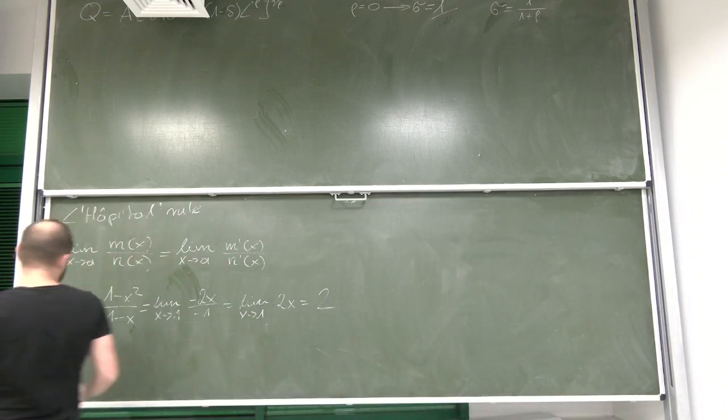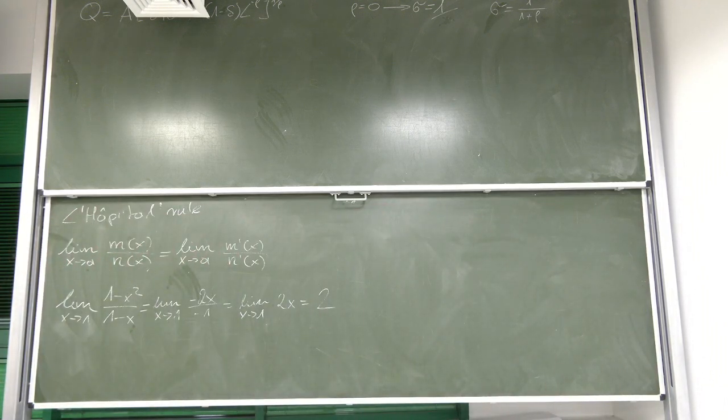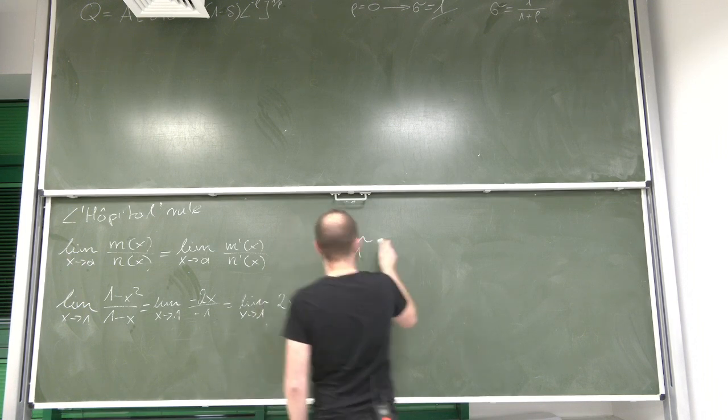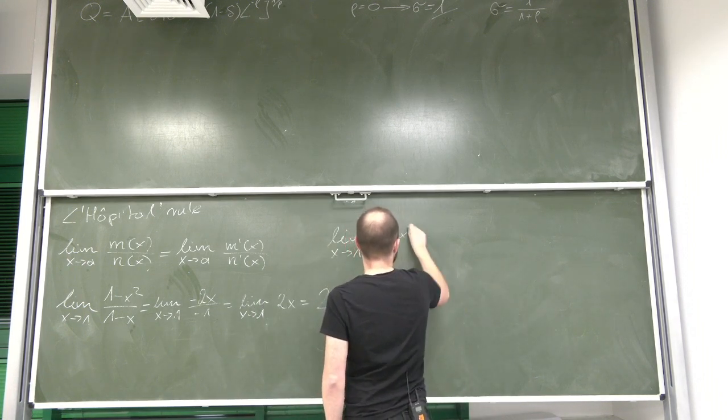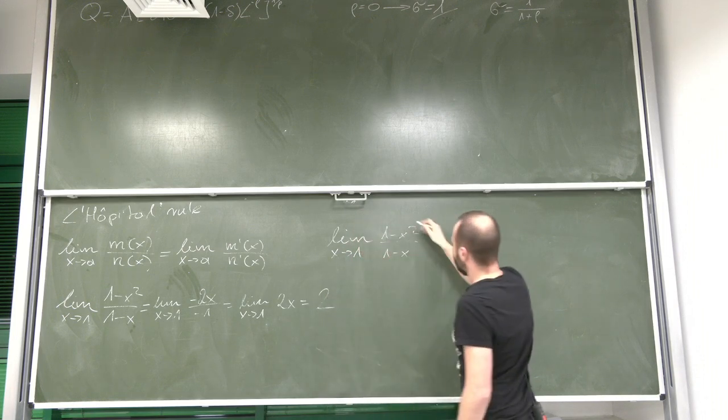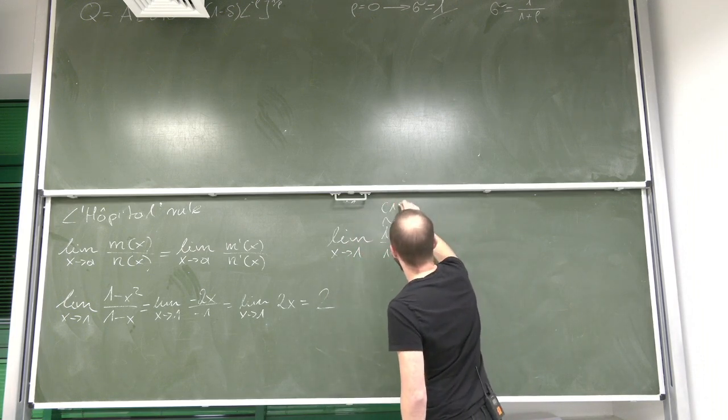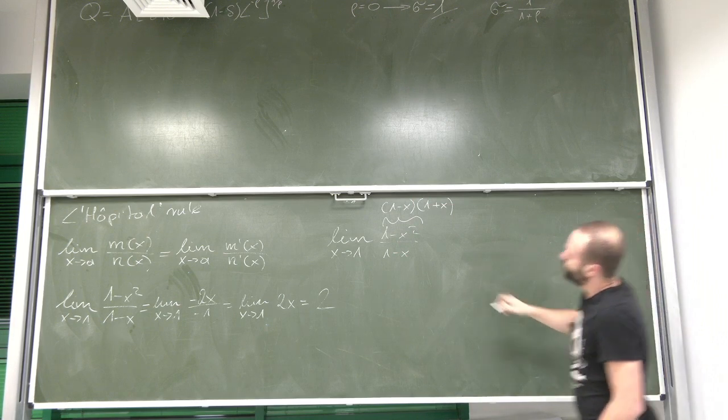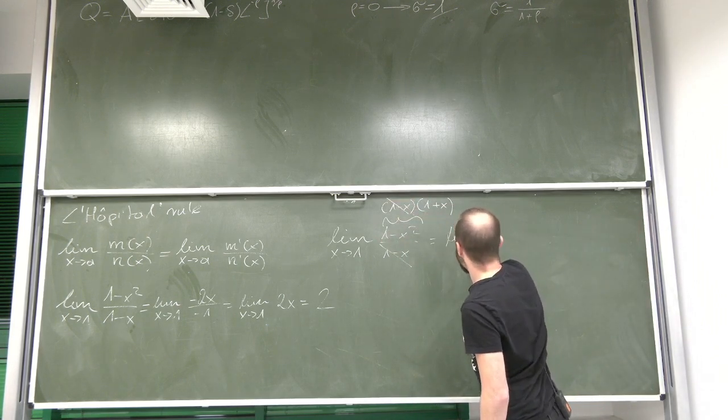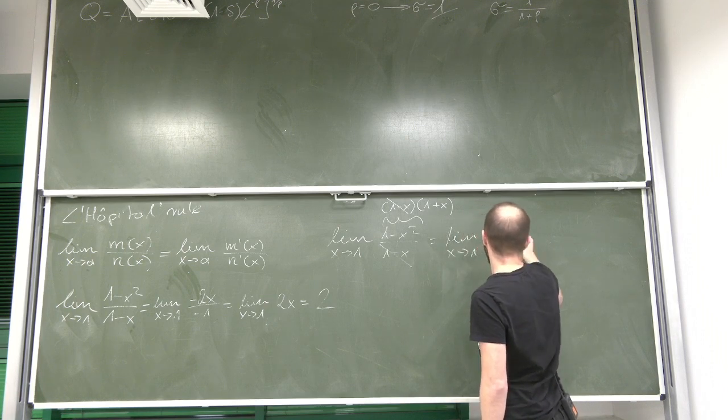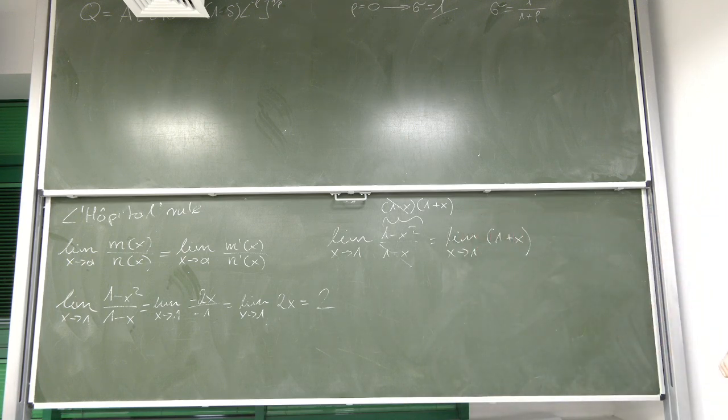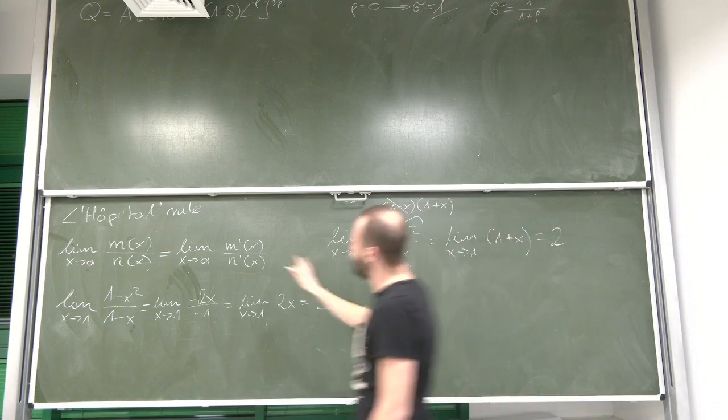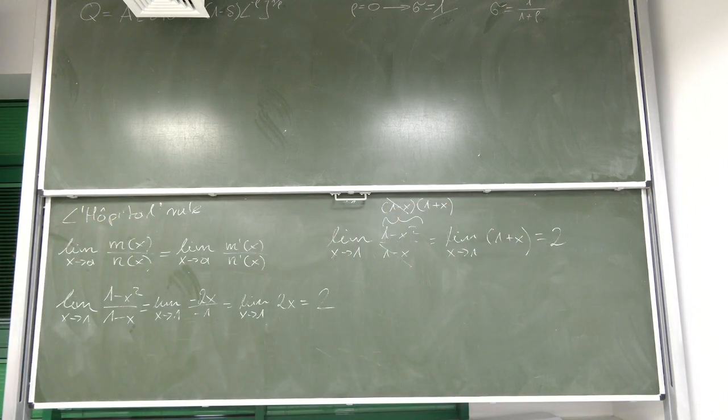And look, usually, especially when you have a problem like this in high school, the easiest way to deal with it would be to use the fact that 1 minus x squared is the same as 1 minus x times 1 plus x. Those two cancel each other out. And what we have over here is simply a limit of 1 plus x, which again, when we can substitute, we see it's 2. So the rule that we're not going to be proving here definitely seems to work.